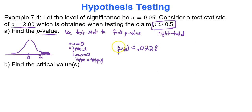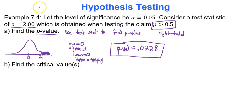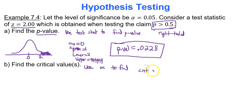I always like to write out at least part of the word p-value rather than just 'p equals,' to avoid confusion with proportions and other notation. So p-value is 0.0228. Now find the critical values — you will use alpha, your significance level, to find critical values. Always.